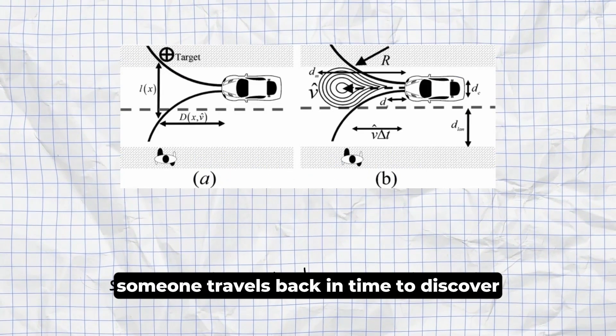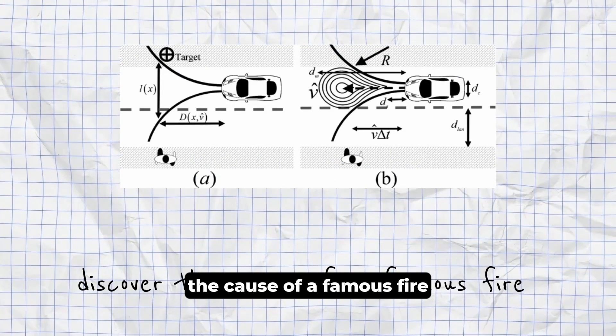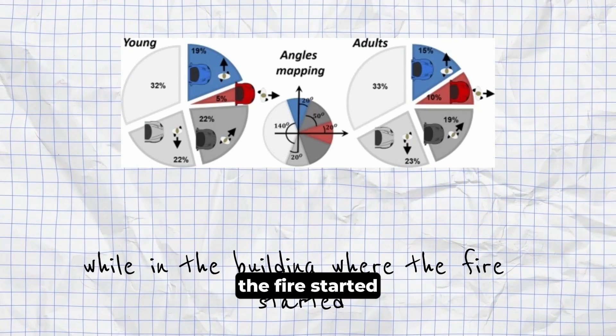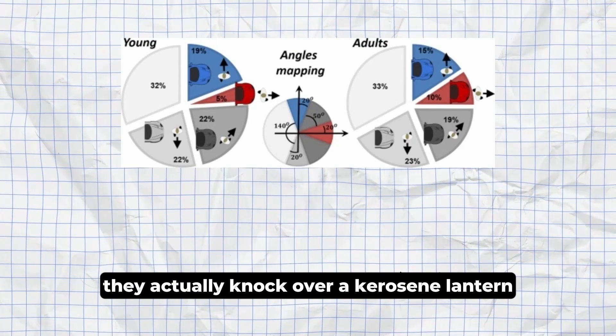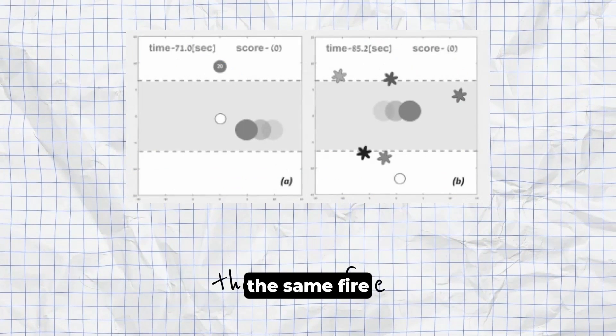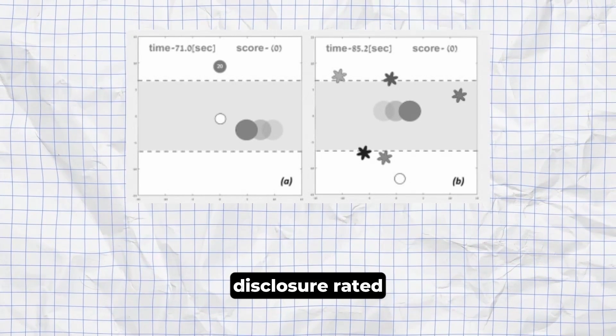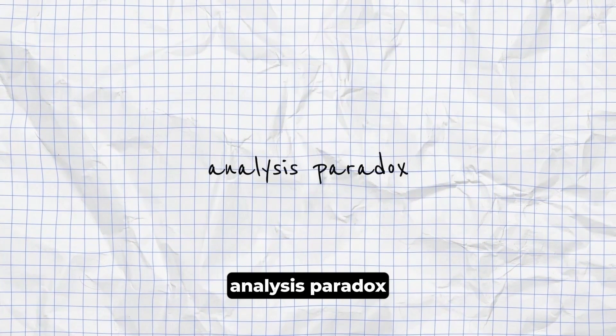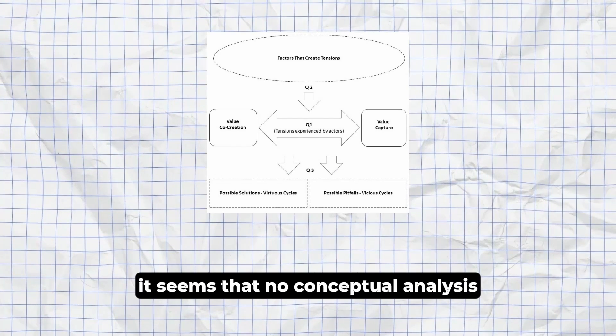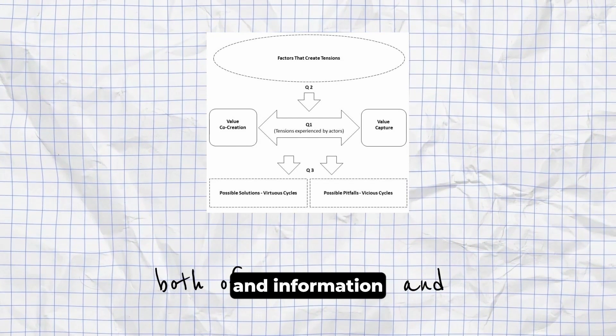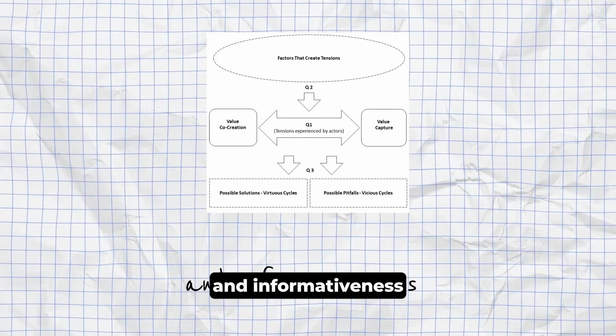Predestination Paradox. Someone travels back in time to discover the cause of a famous fire. While in the building where the fire started, they actually knock over a kerosene lantern and cause the fire, the same fire that inspired them years later to travel back in time. This is closely related to the Bootstrap Paradox. Analysis Paradox. It seems that no conceptual analysis can meet the requirements both of correctness and informativeness.